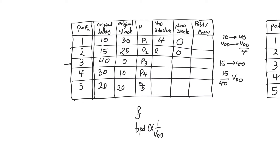Path 2 achieves zero slack if we reduce the supply by a factor of 2.67, which is 15 over 40. Path 3 cannot abide any reduction in supply because at VDD it already has zero slack, so its supply reduction ratio is unity. For path 4, the reduction is 30 over 40, giving a factor of 1.33 to reach zero slack — the least reduction because it had the least positive slack. Path 5 finishes at half the time it should, so it can reduce its supply by a factor of 2 to end up with zero slack.